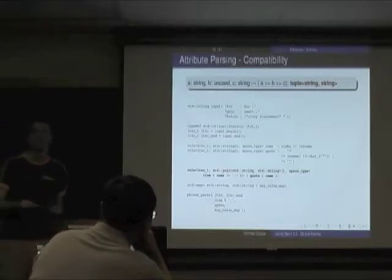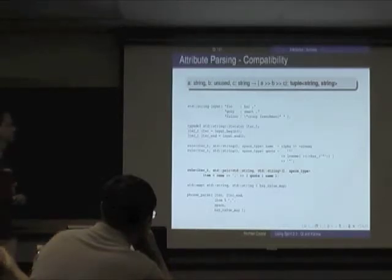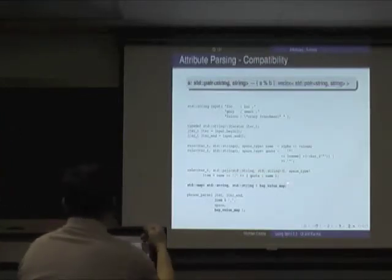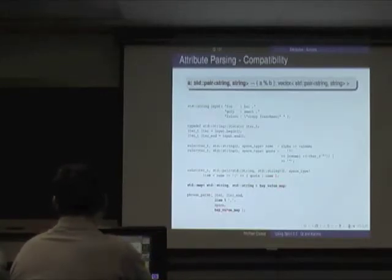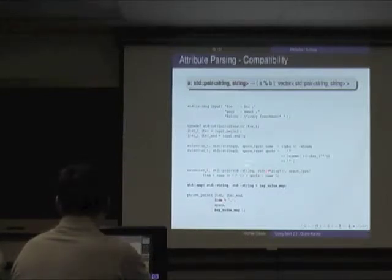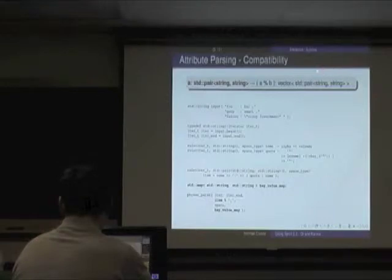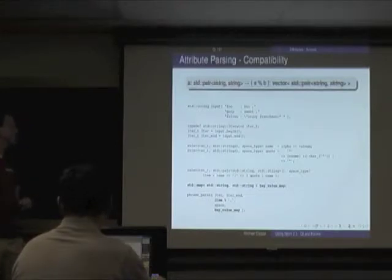Now we have a map. Items is a list delimited by commas — item is our pair of strings. The list ends up as a vector of std::pair of strings, which is compatible with a map of string to string. So I've parsed directly into my map.